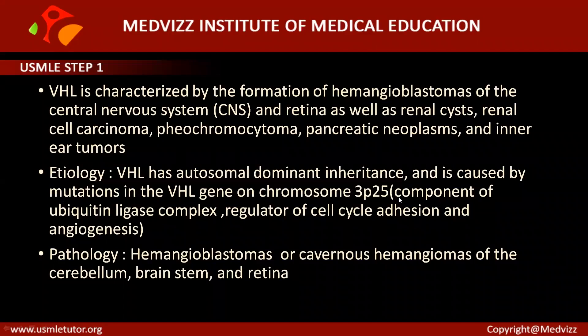The etiology is deletion of the VHL gene on chromosome 3, with autosomal dominant inheritance. The VHL gene is a tumor suppressor gene that functions as a component of the ubiquitin ligase complex. It is also responsible for regulation of the cell cycle, cell adhesion, and angiogenesis.